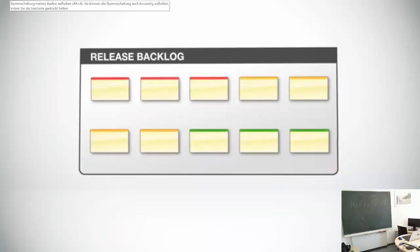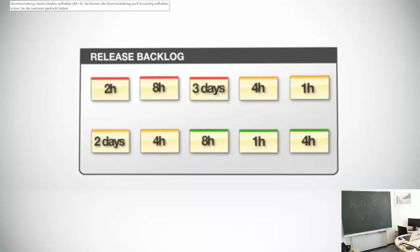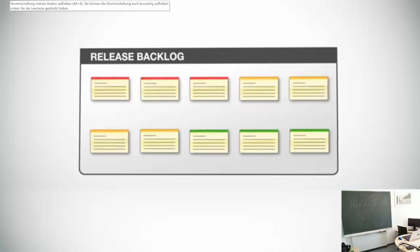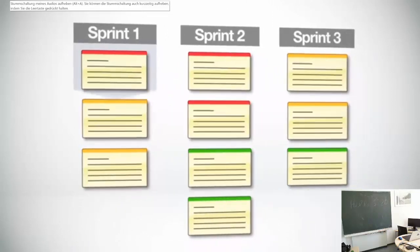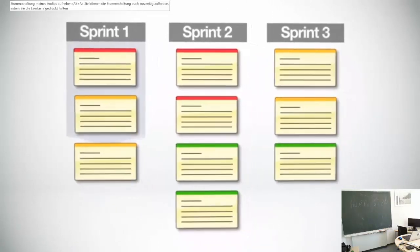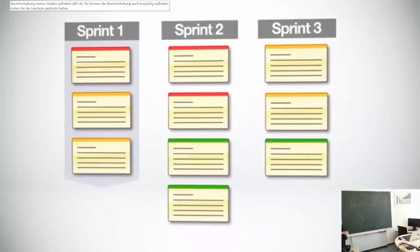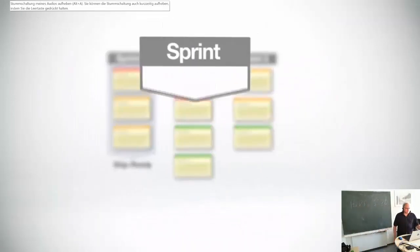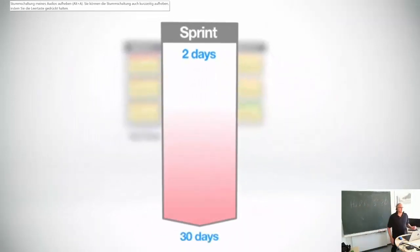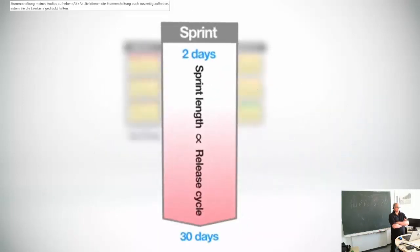With a prioritized set of user stories and the estimated amount of work at hand, we're now ready to plan out several sprints to get the work done. Sprints are short-duration milestones that allow teams to tackle a manageable chunk of the project and get it to a ship-ready state. Sprints generally range from a couple of days to as much as 30 days in length, depending on the product's release cycles — the shorter the release cycles, the shorter each sprint should be. You'll want to have at least two to as many as a dozen sprints in a given release.